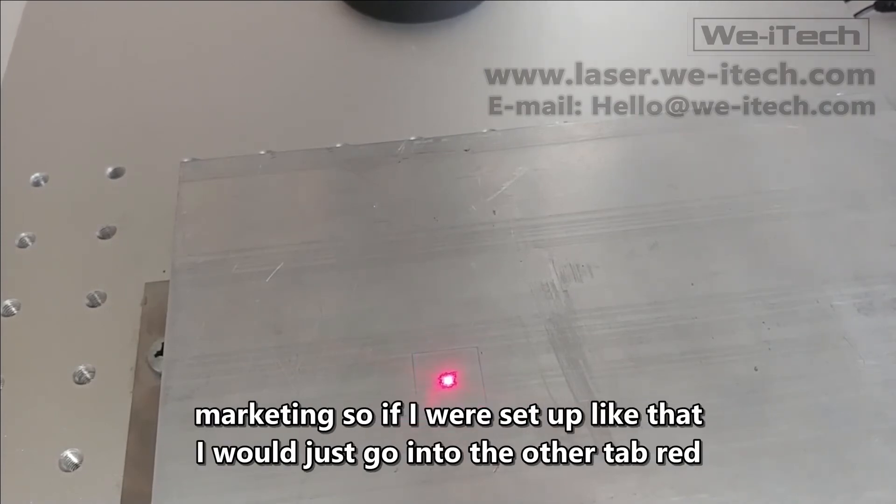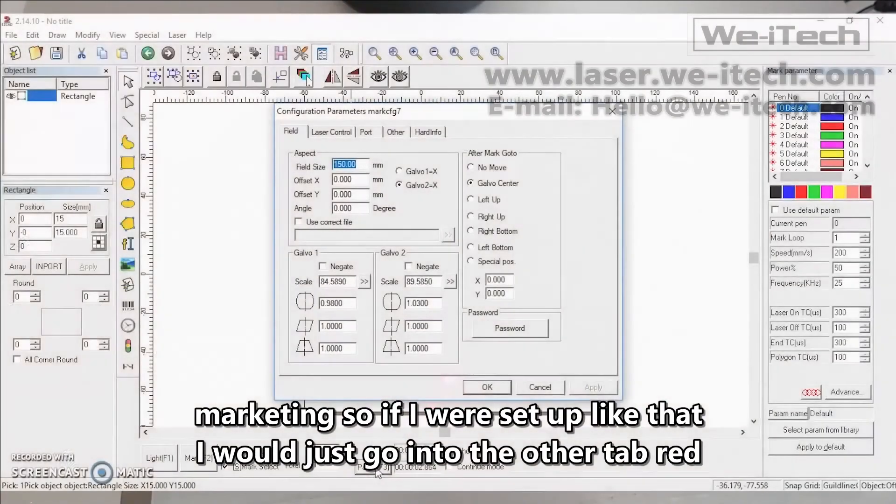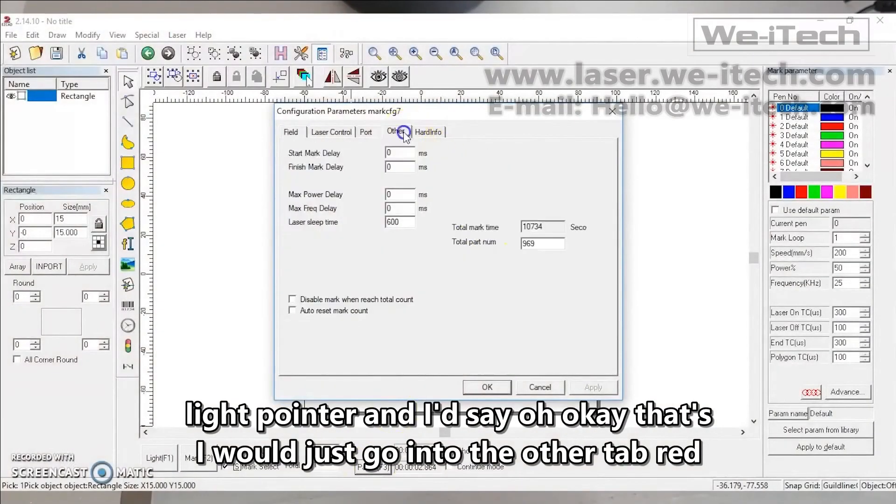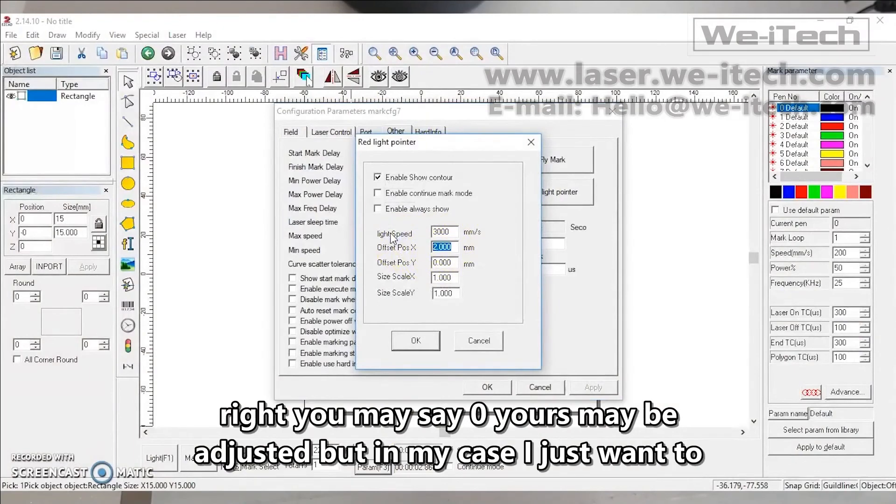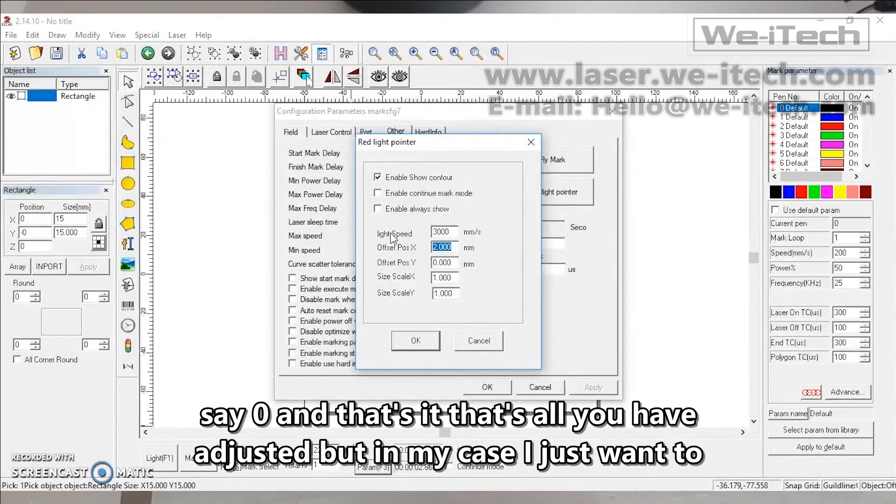But that doesn't help if you were already in this red light position that doesn't coincide with the actual marking. So if I were set up like that, I would just go into the other tab, red light pointer, and I'd say, oh, OK, that's what's wrong. It's two millimeters to the right. Yours may say zero. Yours may be adjusted. But in my case, I just want it to say zero. And that's it.